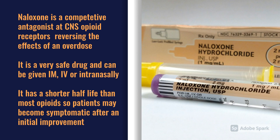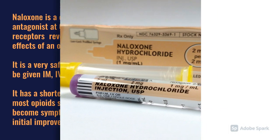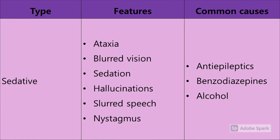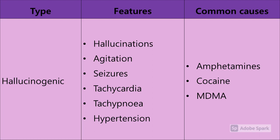The sedative toxidrome - from benzos or alcohol - gives a low GCS, slurred speech, blurred vision, hallucinations, and neurologically they may get nystagmus and be ataxic. Then there's the hallucinogenic toxidrome where patients have hallucinations and are often quite agitated, tachycardic, breathing quickly, hypertensive, and they might seize. We commonly see that with amphetamines, cocaine, MDMA, and ecstasy.